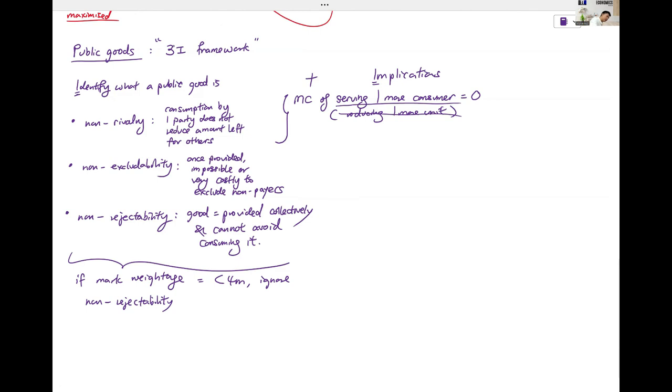For allocative efficiency, P equals to MC. Right? P equals to MC, which now equals to zero. Because MC is zero. So P equals to MC equals to zero.